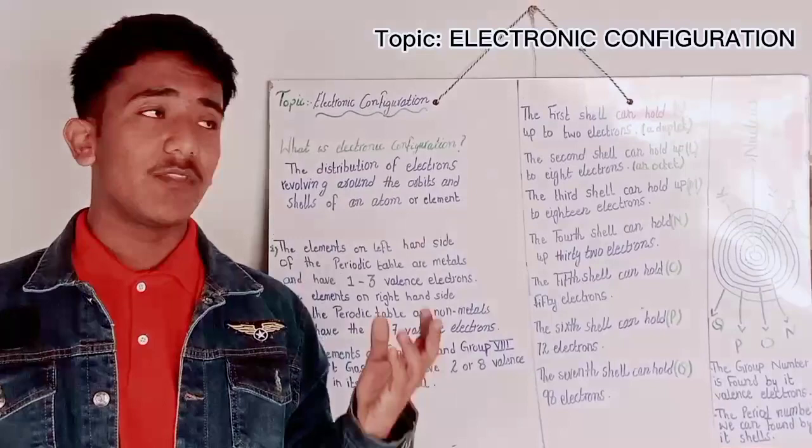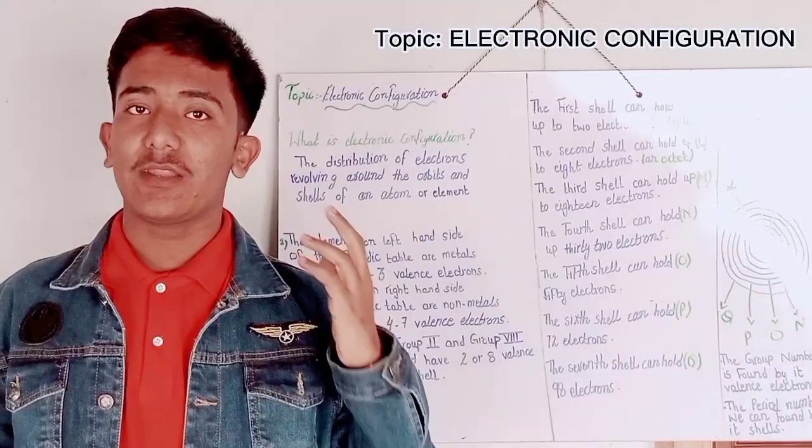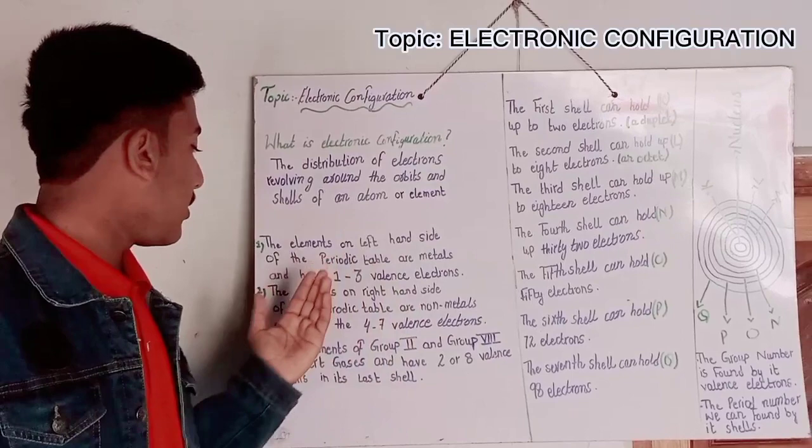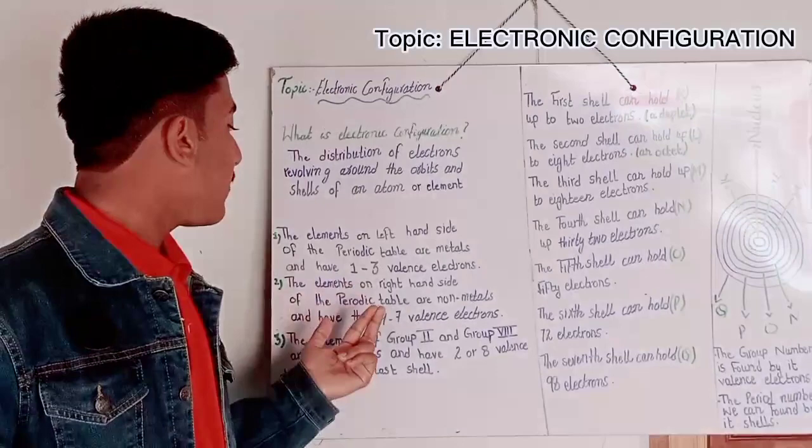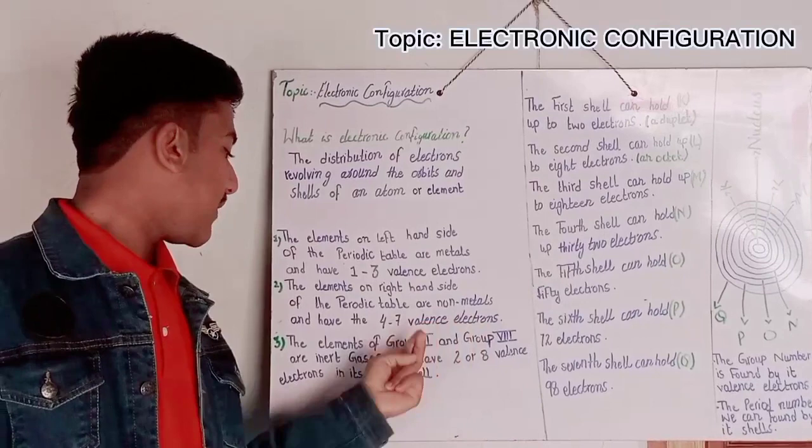The elements on the left side of the periodic table are metals and have 1-3 valence electrons. The elements on the right side of the periodic table are non-metal and have 4-7 valence electrons. The elements of group 2 and group 8 are inert gases and have 2 or 8 valence electrons in its last shell.